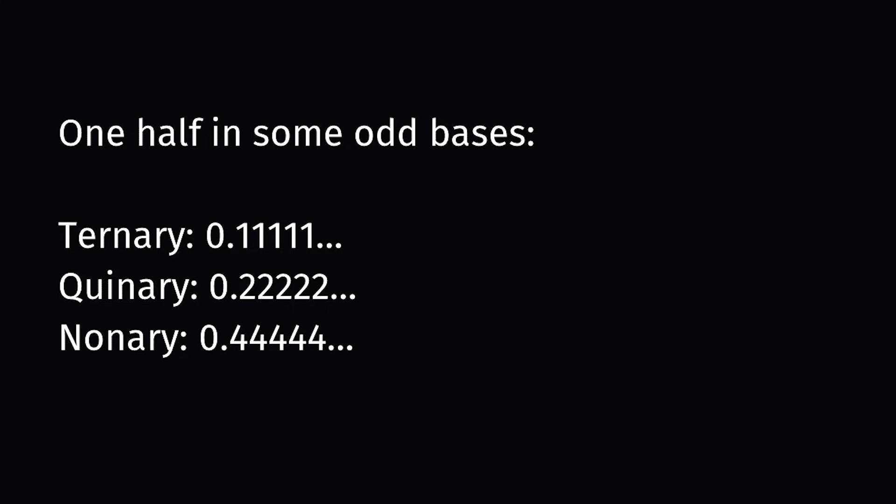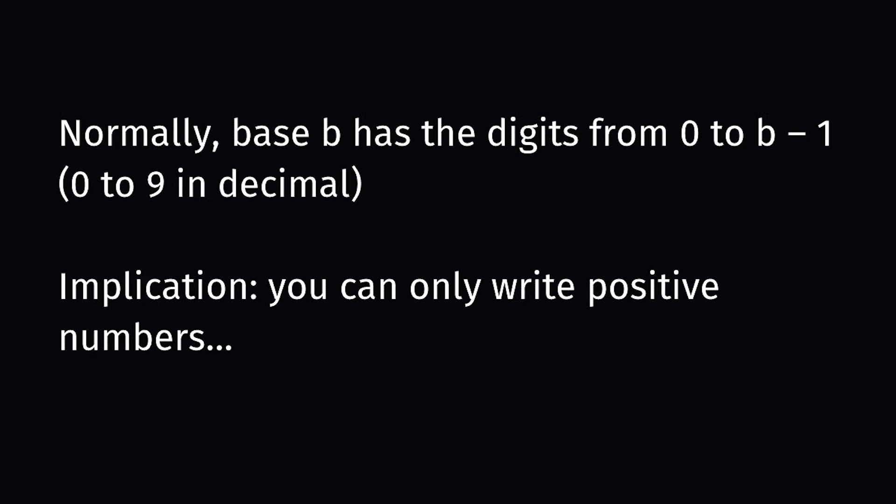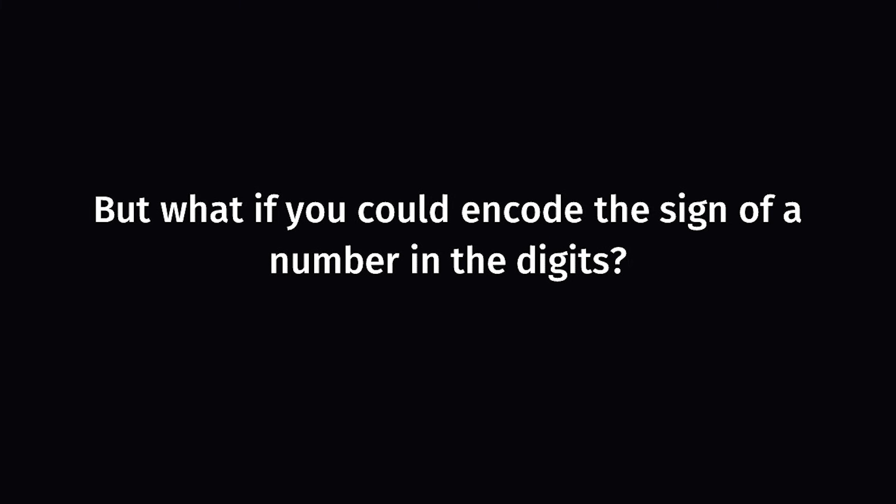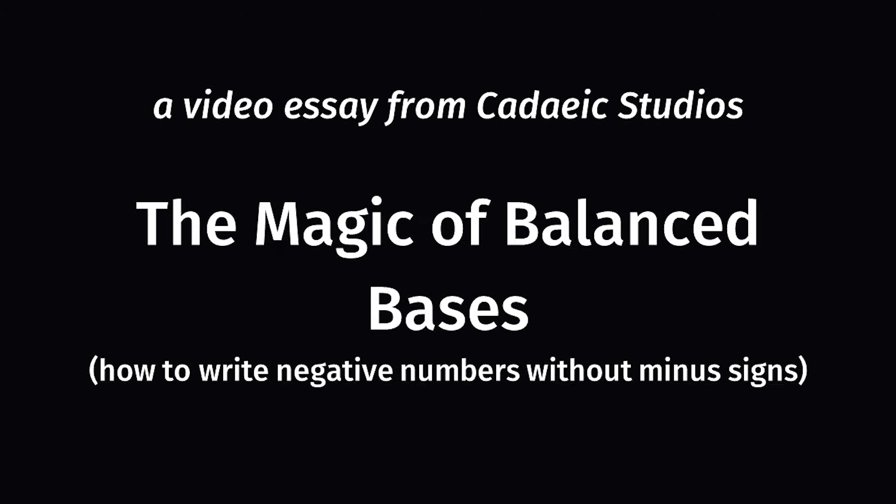But there is one thing that odd bases can do that doesn't often get talked about. For that, we must revisit what it means to write a number in a certain base. In all the standard bases, or positional number systems to give them their fancy name, the digits used to represent numbers in base b will be from 0 to b-1. So in decimal, base 10, we use the digits from 0 to 9. Notice how they will always represent positive quantities. So to express a negative number, you must add a minus sign for the number's absolute value. What if, instead, the sign of a number could be encoded within the digits themselves? And this is where sign-digit representations come into play, and a particular type which I like to call balanced bases.